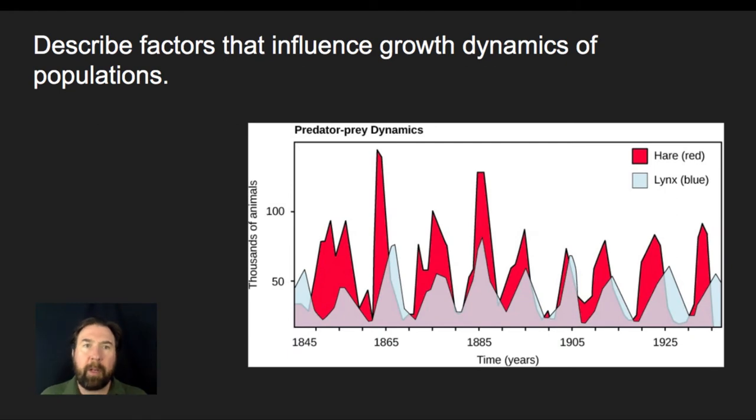So first of all, I want to describe some factors that influence growth dynamics of populations. One key thing that we can think about in terms of survivability could be something like a predator-prey dynamic that we see here. In predator-prey dynamics, it brings up a lot of different factors. One thing is that as organisms struggle for survival, they are going to have some energy demands and they may also be the energy source for another organism.